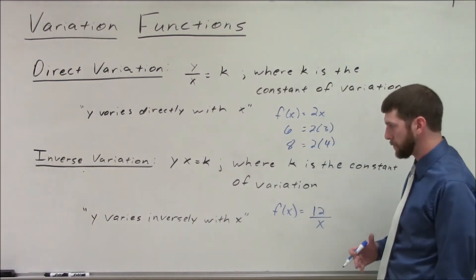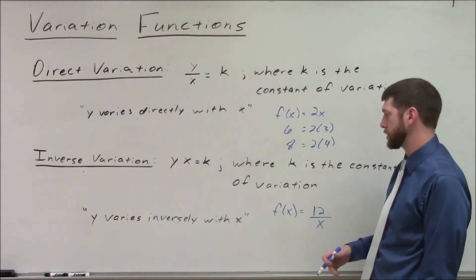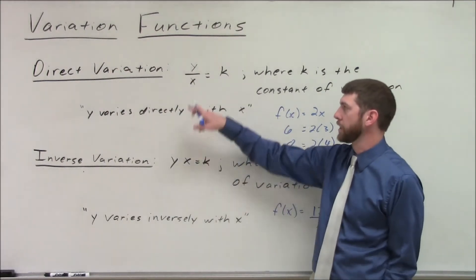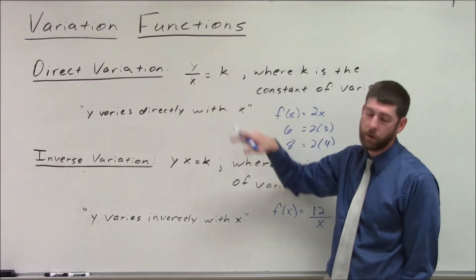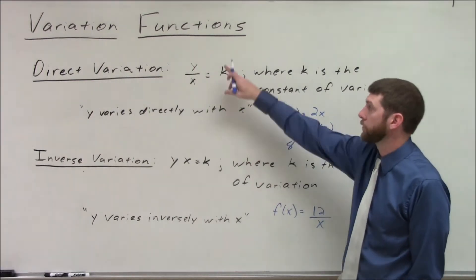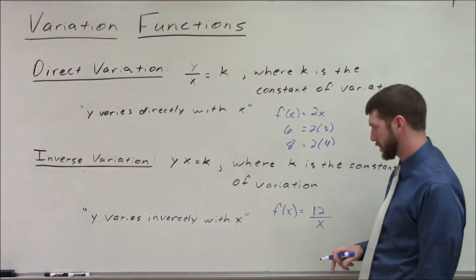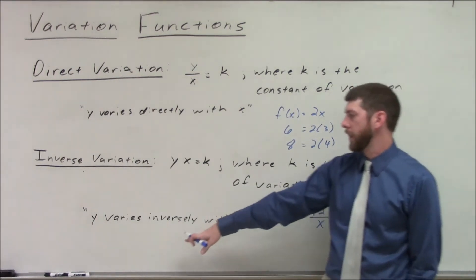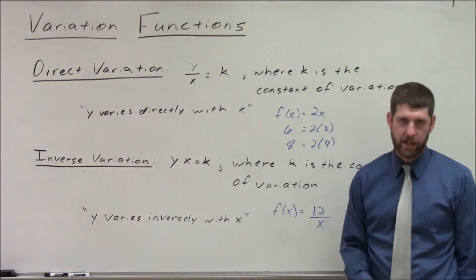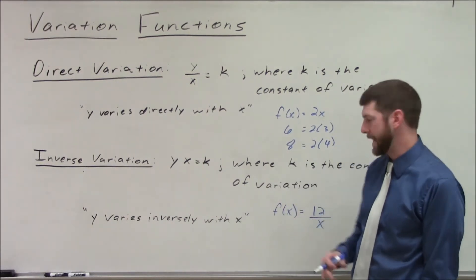Inverse variation kind of works in the opposite direction, the inverse direction. So instead of saying that we have a constant ratio, we have a constant product between the two of them. So we say y varies inversely with x, or y varies inversely as x.